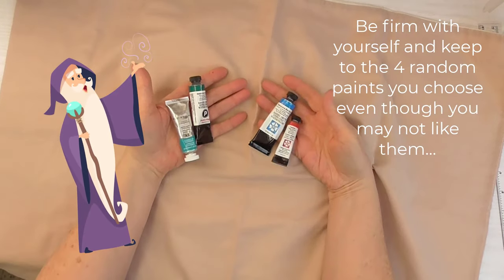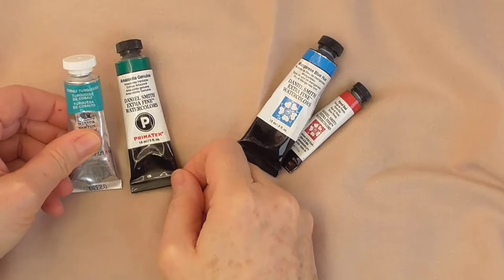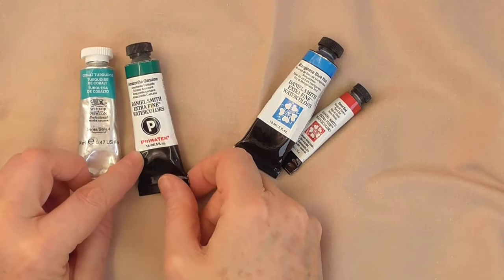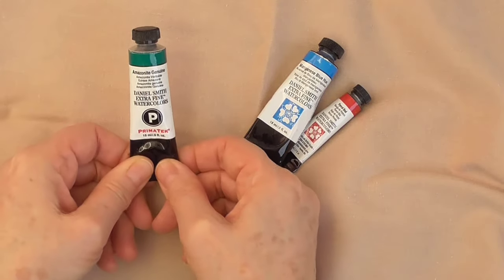Oh my word! Let me zoom in on these now. What have I got? Cobalt turquoise! I must have had a separate tube of cobalt turquoise. It's by a different make. Oh well, that's no good. I'll have to leave that out. Amazonite genuine - I'm definitely keeping that one.